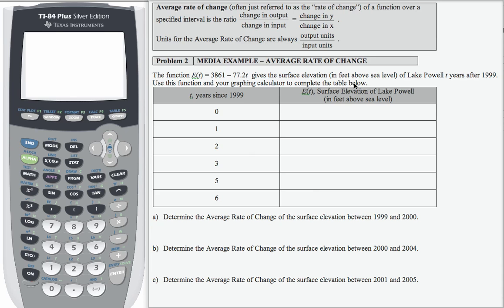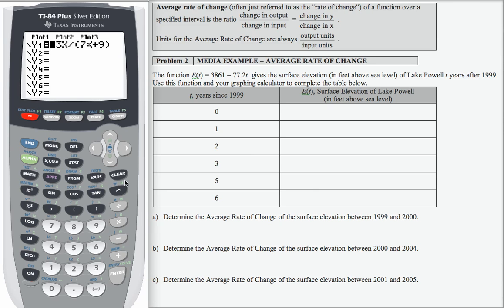So let's enter this function into our graphing calculator. We're going to go to our y equals and if there's anything in there, let's clear it out. I'm going to enter 3861 minus 77.2 and we can't do t but we can do x. So there is our function.